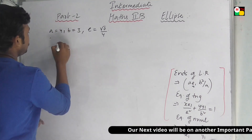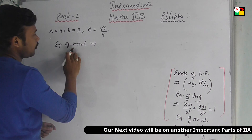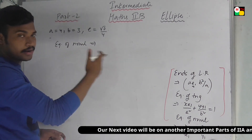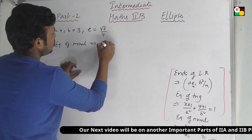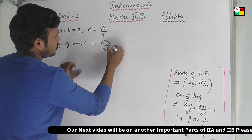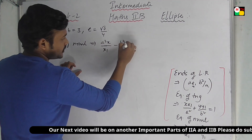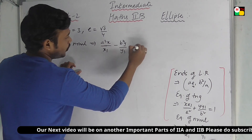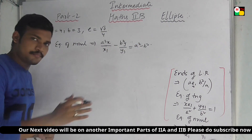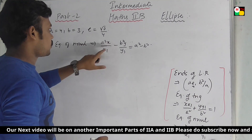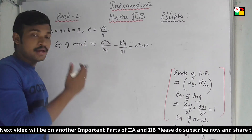Next is the problem for the equation of the normal. The formula for the normal to the ellipse is: a square x by x1 minus b square y by y1 equal to a square minus b square. This is a very important formula — note it carefully.